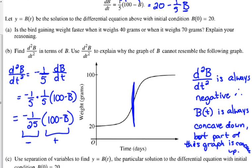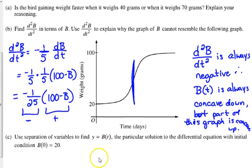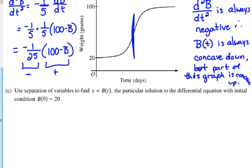That one, honestly, was pretty unusual. I haven't really seen many questions like that before. And then C, they say you use separation of variables to find the original, the particular solution with the initial condition of B of 0 equals 20.